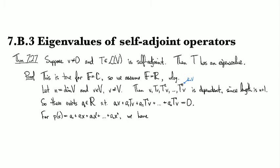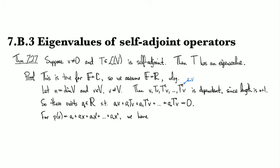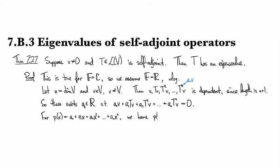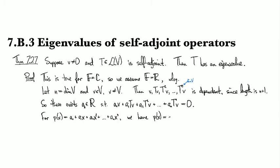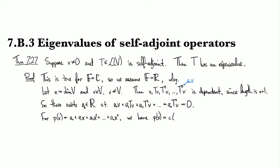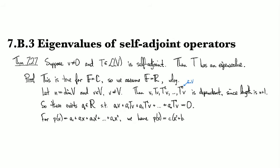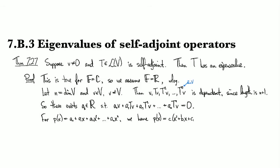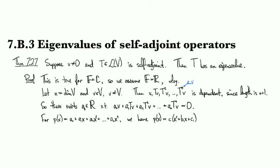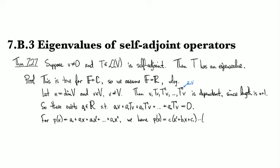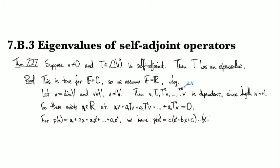By the fundamental theorem of algebra, we can write this as c times some product of irreducible quadratic factors, so like x squared plus b_1 x plus c_1, and then so we've got maybe a few quadratic factors.